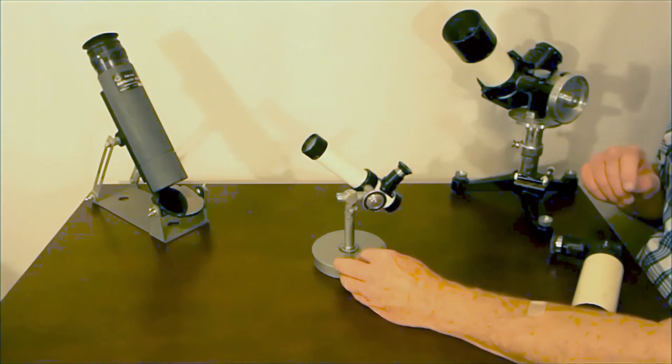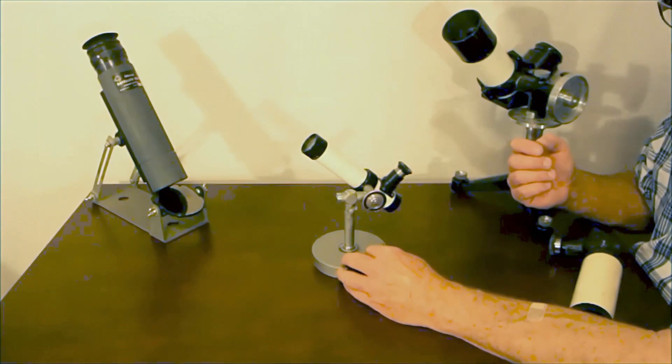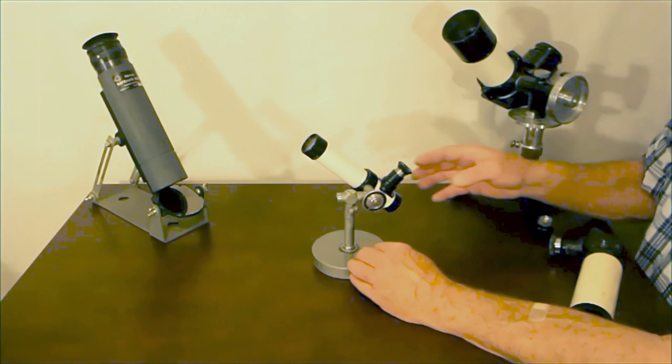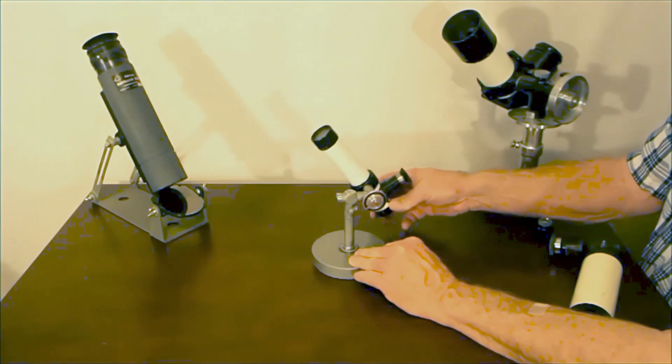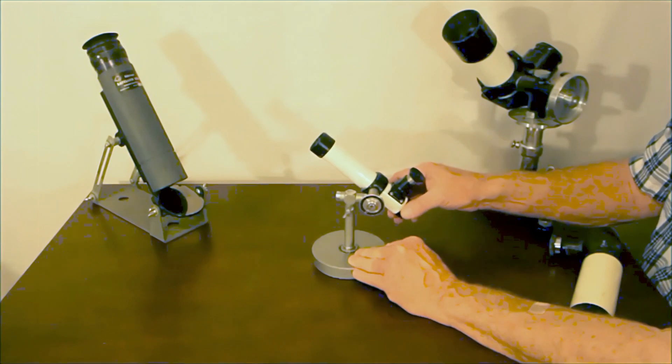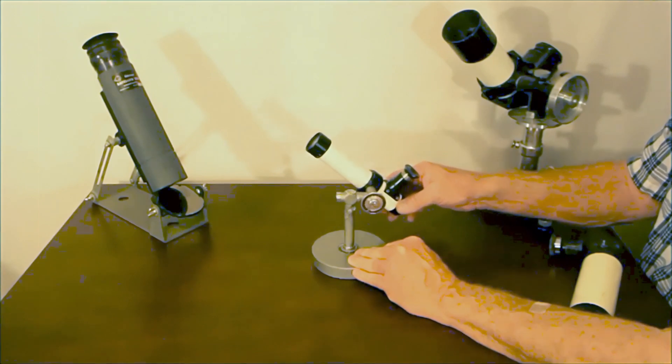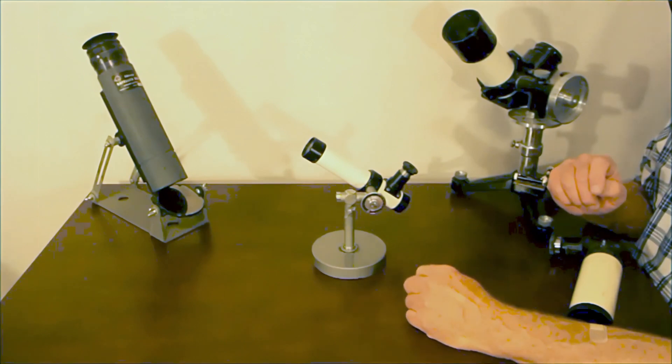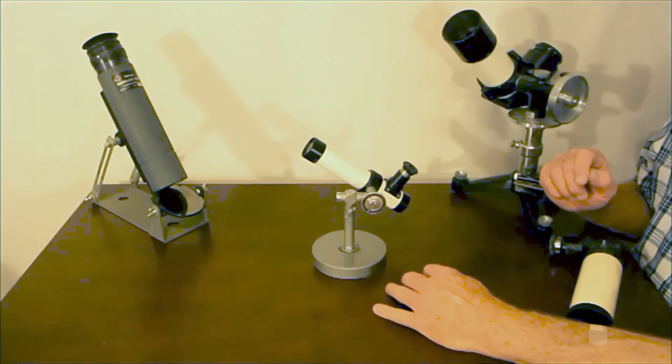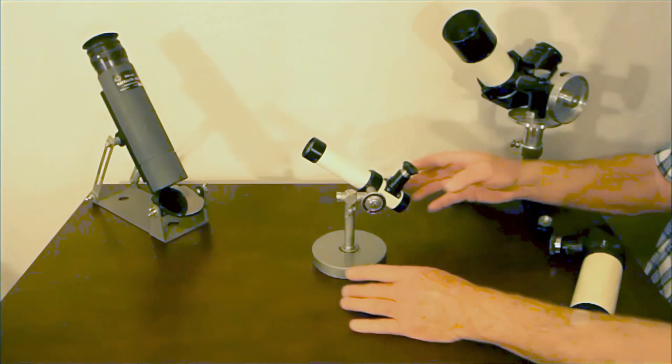This is not nearly as big and therefore not nearly as useful as the Unitron. But in principle you could easily have used this to at least make some approximate measurements of where something would have been found in the sky. So it's got a lot of the features of the Unitron, but as you can see it's considerably inferior in many respects.